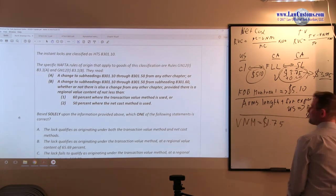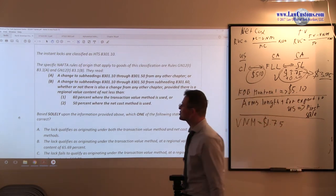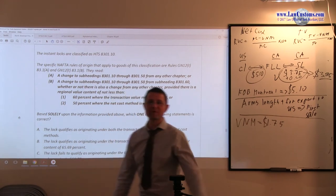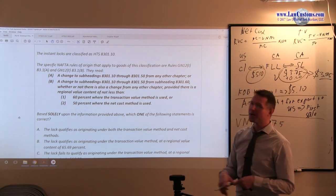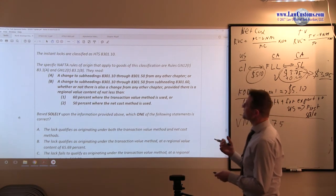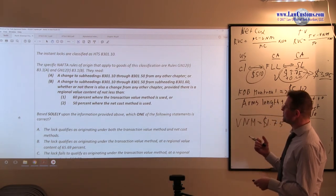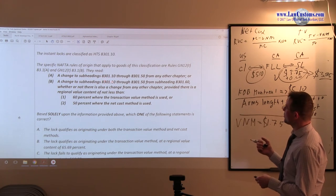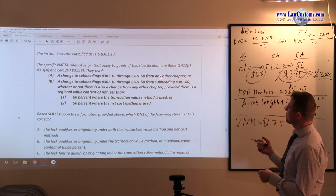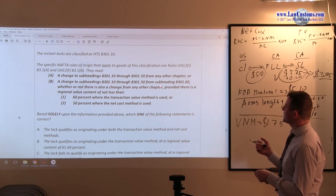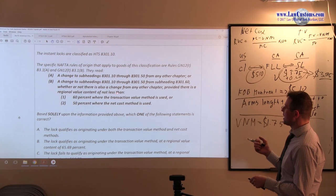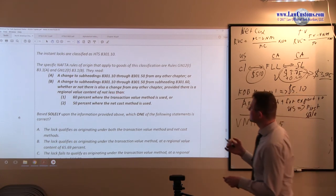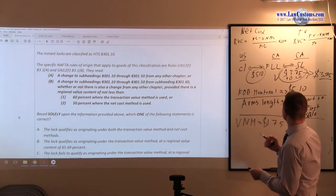Now, here is something interesting happening. The instant logs are classified and they are providing us the classification, but the customs examiners go beyond that. They also provide us the rule. So, we do not need to go to the general note 12 and look at it on our own so we can save some time. So, they are stating that under this particular rule, we must have the following stuff. A change to subheading 8301.10 through 8305.0 from any other chapter. Alright. Or, a change to subheading 8301.60, whether or not there is also a change from any other chapter, provided that the regional value content is the following.